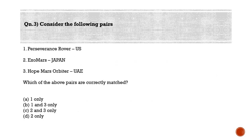Last question for the day: consider the following pairs — one: Perseverance Rover, US; two: ExoMars, Japan; three: Hope Mars Orbiter, UAE. Which of the above pairs are correctly matched? Option A: one only; option B: one and three only; option C: two and three only; option D: two only. The correct answer is option B — one and three only.